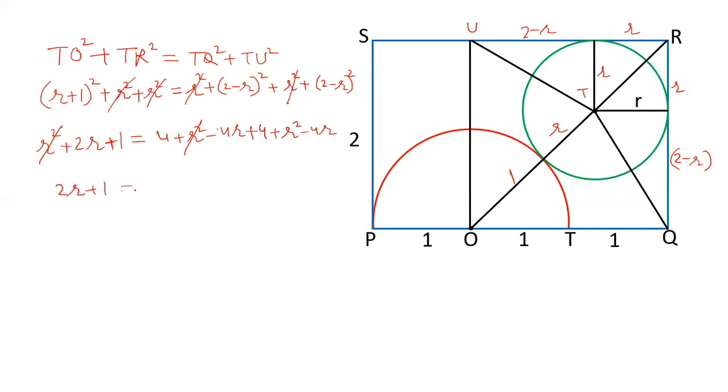Value is 2R plus 1. 4 plus 4 is 8. Minus 4R and minus 4R is minus 8R. And only one R square is left. So if we transfer this 2R and 1 to this side, it will be R square minus 8R plus 8 minus 2R minus 1 is equal to 0. 8R and 2R is 10R. 8 minus 1 is 7. So there is the final equation.